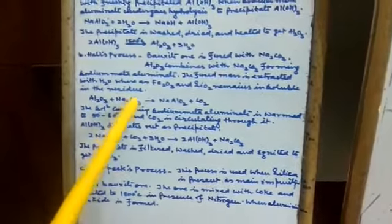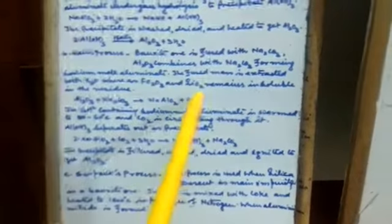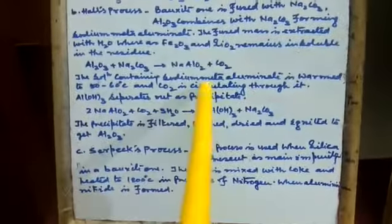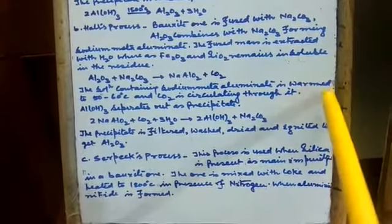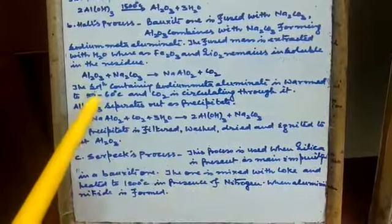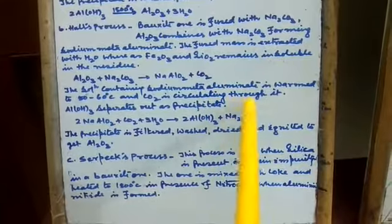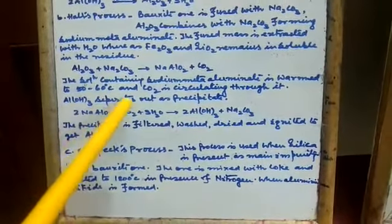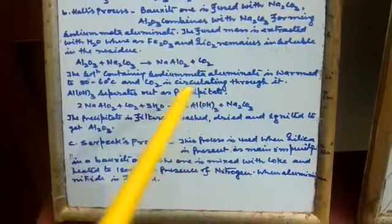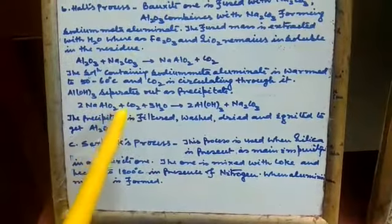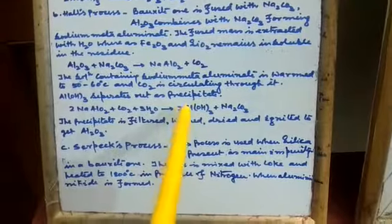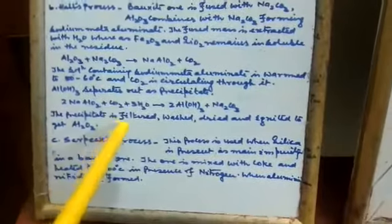Al2O3 plus Na2CO3 gives 2NaAlO2 plus CO2. The solution containing sodium meta-aluminate is warmed to 50 to 60 degrees Celsius and CO2 is circulated through it. Aluminum hydroxide separates out as precipitate. 2NaAlO2 plus CO2 plus 3H2O gives 2Al(OH)3 plus Na2CO3. The precipitate is filtered, washed, dried, and ignited to get Al2O3.